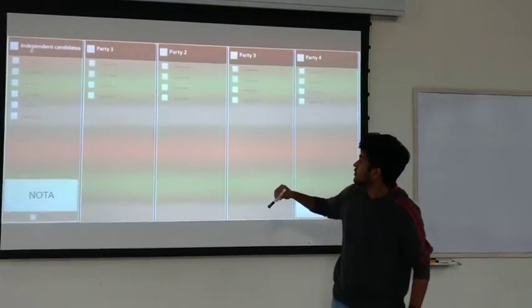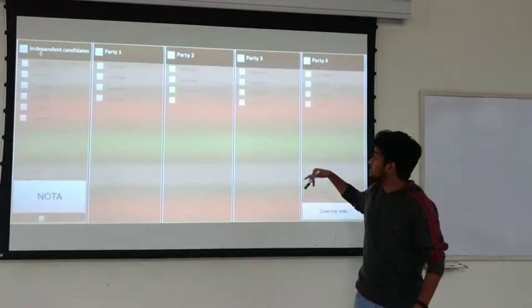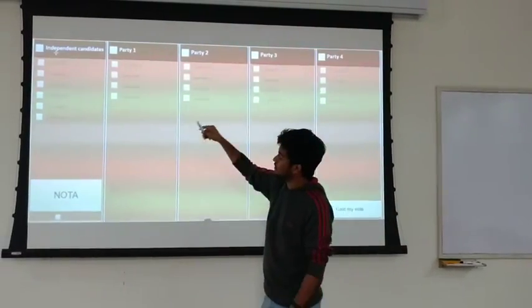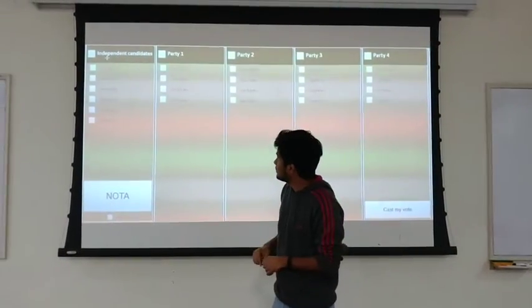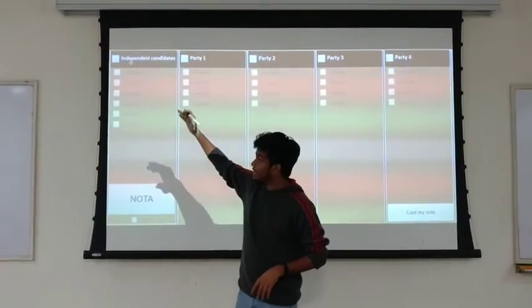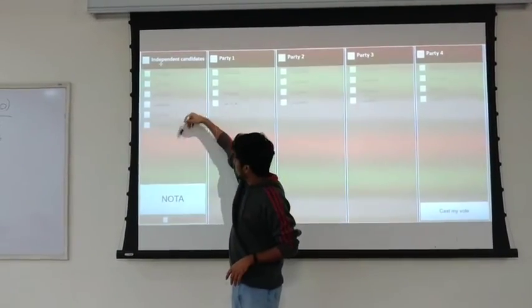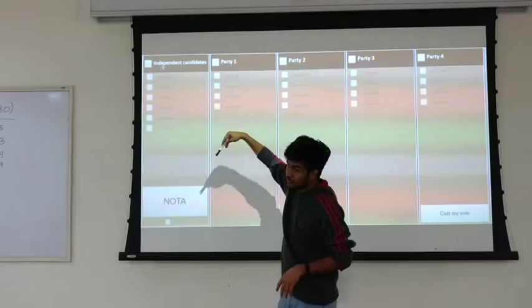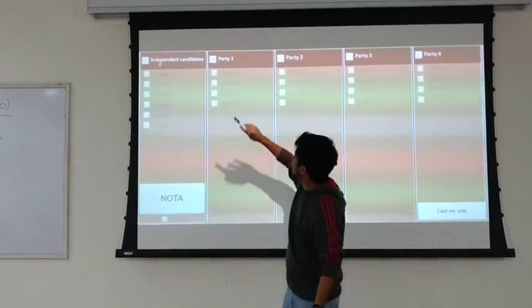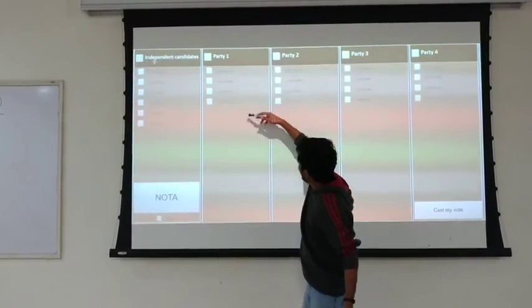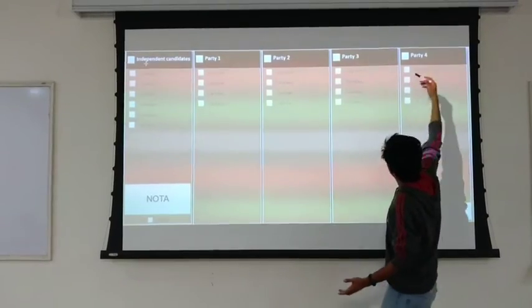When you log on to the system, you'll get a list which basically displays all the different candidates and parties contesting. On one column you have all the independent candidates listed with their names. Then you'll have for each political party listed, a party with each candidate for each party listed up.